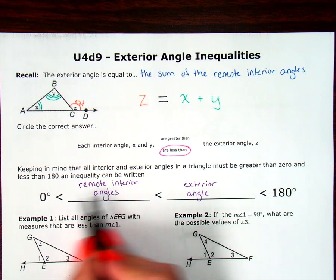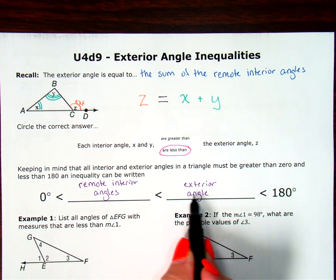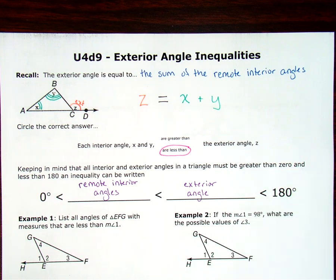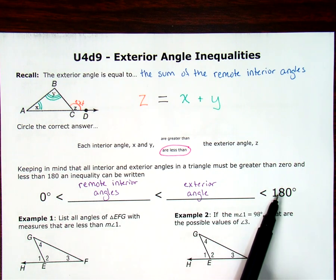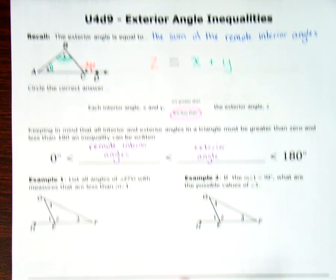Both of these angles have to be greater than zero — actually all of these have to be greater than zero — and all of these have to be less than 180. So we actually have a four-part inequality sentence here that we're going to be working with for each of these problems. Let's look and see how we work with this.